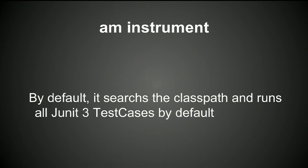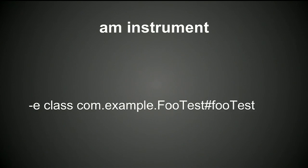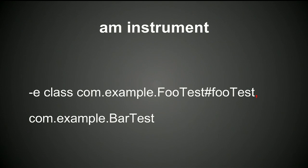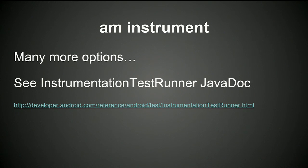By default, if you don't pass arguments, it will search your entire classpath and run every JUnit 3 test case it finds, which can be slow. You can pass in just a class name, or a specific method using a hash and method name. You can run subsets of your tests very quickly this way, and it executes very fast if everything's already installed on the phone. There's a lot more options in the documentation, in the Javadoc for InstrumentationTestRunner.